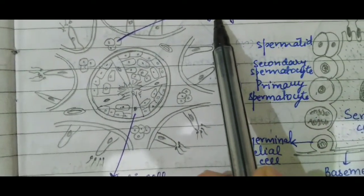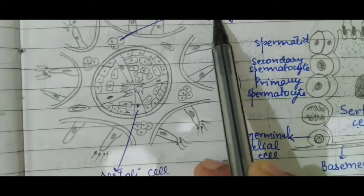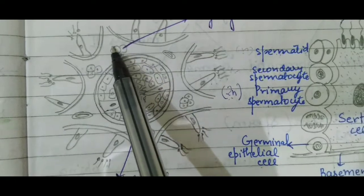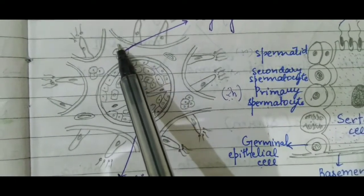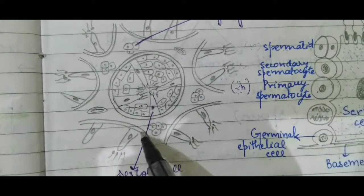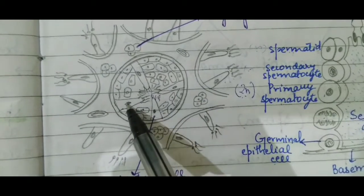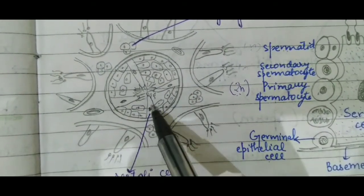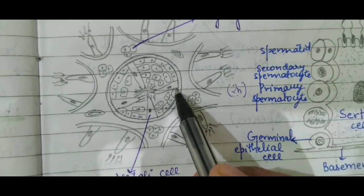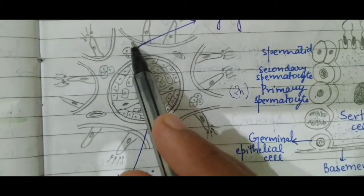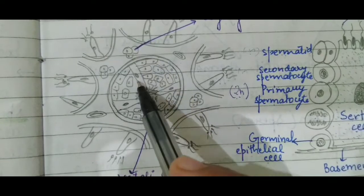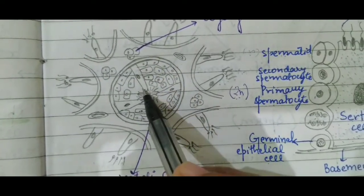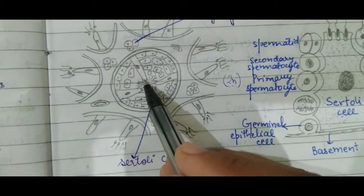The Leydig cells or interstitial cells are present in small groups and are rounded in shape, whereas the Sertoli cells are found singly and are elongated cells. So the second difference is their arrangement and shape: Leydig cells are rounded and present in groups, while Sertoli cells are elongated and present singly.